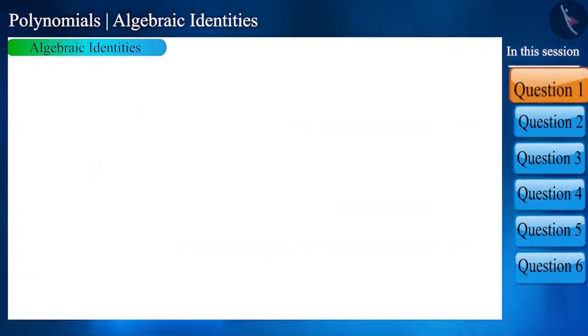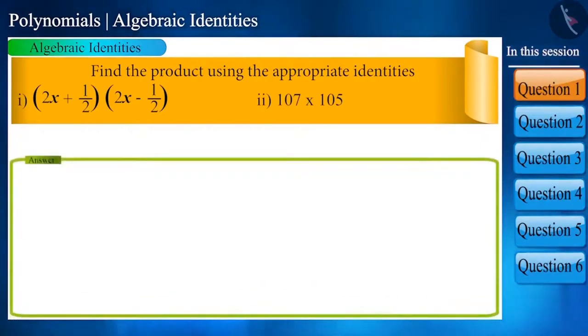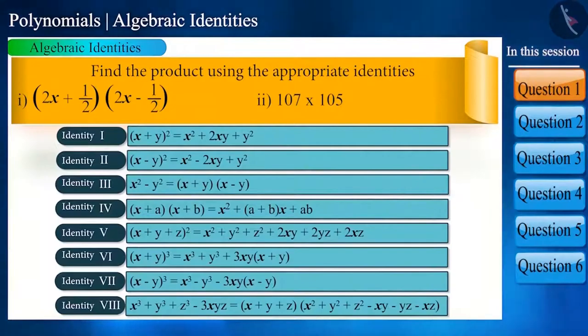So let's start with our first question: Find the product using the appropriate identities. By looking at these 8 identities, can you tell which one can be used to solve this question? To find the answer to this, we will have to see to which identity this question resembles.